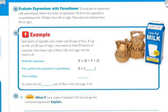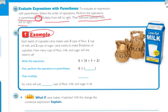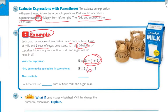Evaluate the expression with parentheses: to evaluate an expression with parentheses, follow the order of operations — perform operations inside parentheses first, then multiply from left to right, then add and subtract from left to right. Each batch of cupcakes Lina makes uses three cups of flour, one cup of milk, and two cups of sugar. Lina wants to make five batches. The expression is five times parentheses three plus one plus two. Doing the parentheses first: three plus one plus two equals six.